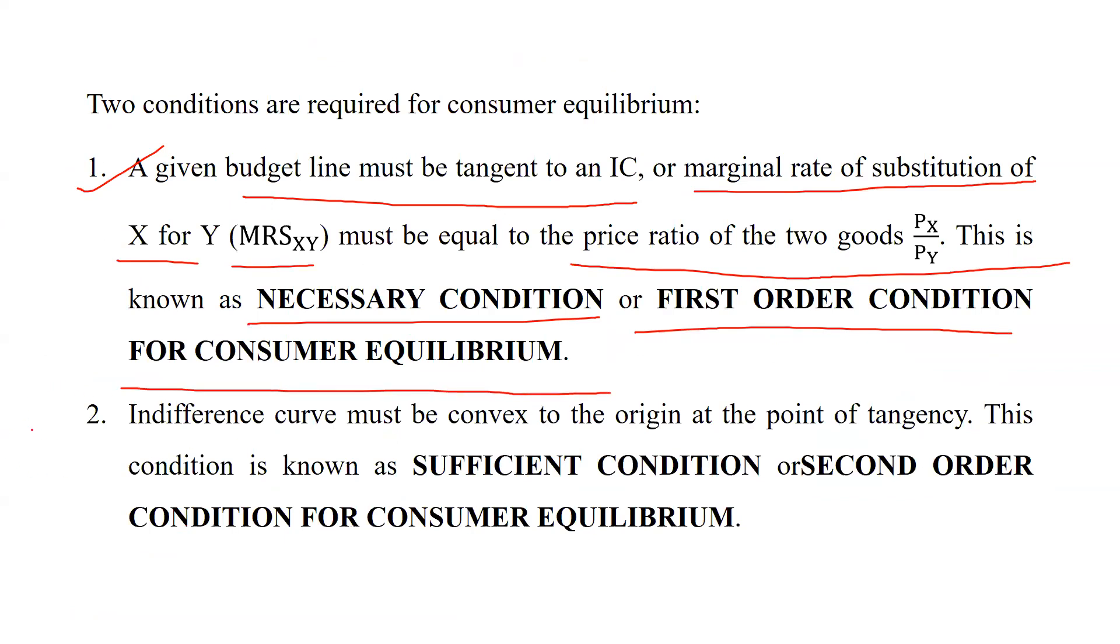The second condition is sufficient condition. What is this? Indifference curve must be convex to the origin at the point of tangency. This condition is known as sufficient condition or second order condition for consumer equilibrium.